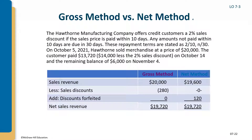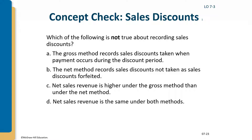In the end, net sales revenue will be $19,720 no matter which method you use. A quiz question: 'Net sales revenue is higher under the gross method than under the net method' — that is not true. Net sales revenue is the same under both methods, so answer C is correct.